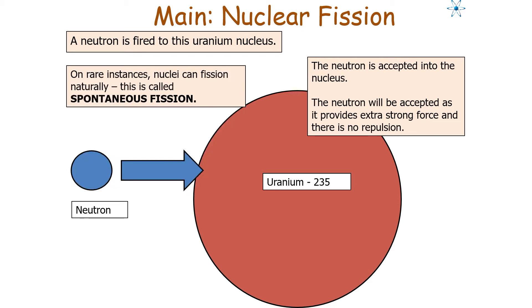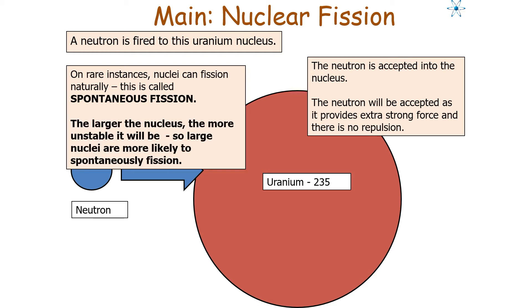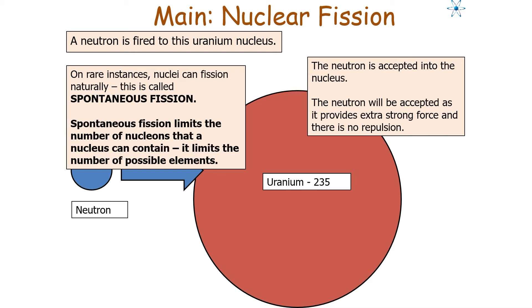On rare instances, nuclei can fission naturally — we call this spontaneous fission. The larger the nucleus, the more unstable it will be, so large nuclei are more likely to spontaneously fission. Spontaneous fissioning limits the number of nucleons a nucleus can contain, and therefore limits the number of possible elements.